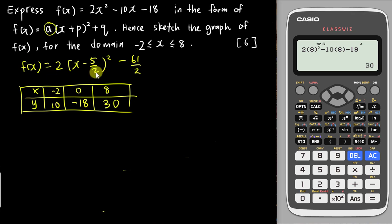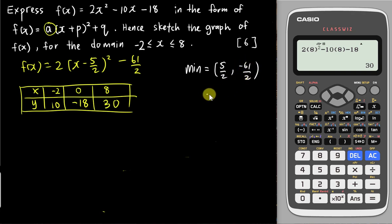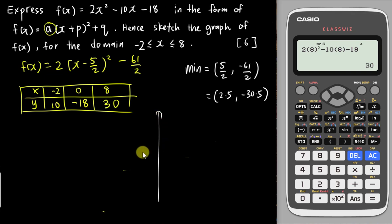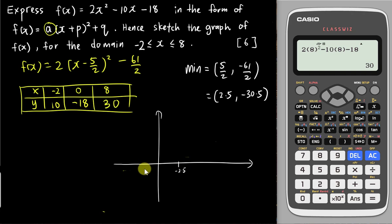To sketch the graph, the calculator already told us the minimum point: x = 5/2 and y = -61/2, which is approximately (2.5, -30.5). Draw the x and y axes. The minimum is at about x = 2.5, so position your axes accordingly. When x = -2 the y value is about 10, so draw a U-shape starting from there.